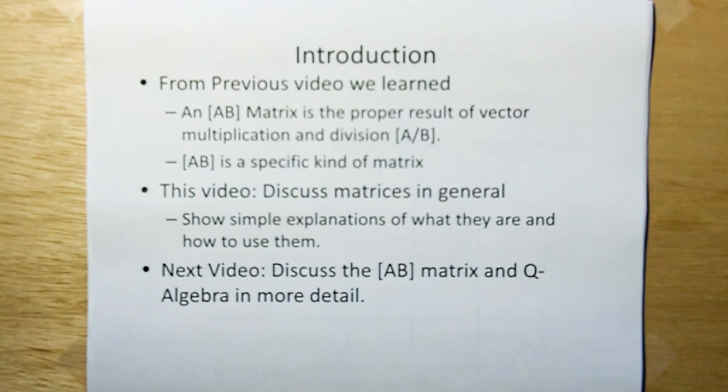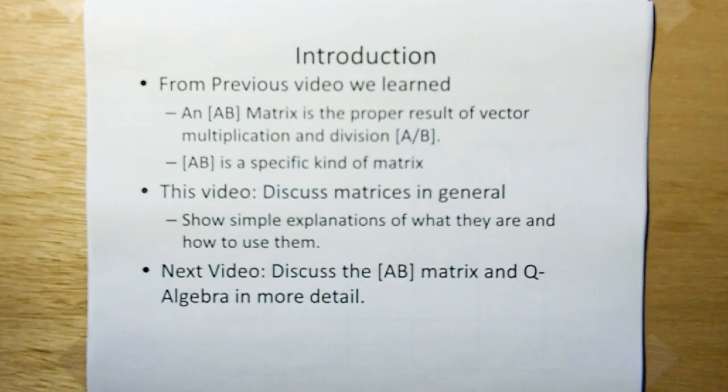From the previous video, we learned that an AB matrix is the proper result of vector multiplication and division, and that an AB matrix is a specific kind of matrix. In this video, we're going to discuss matrices in general and show simple explanations of what they are and how to use them. In the next video, we're going to discuss the AB matrix and Q-algebra in more detail.